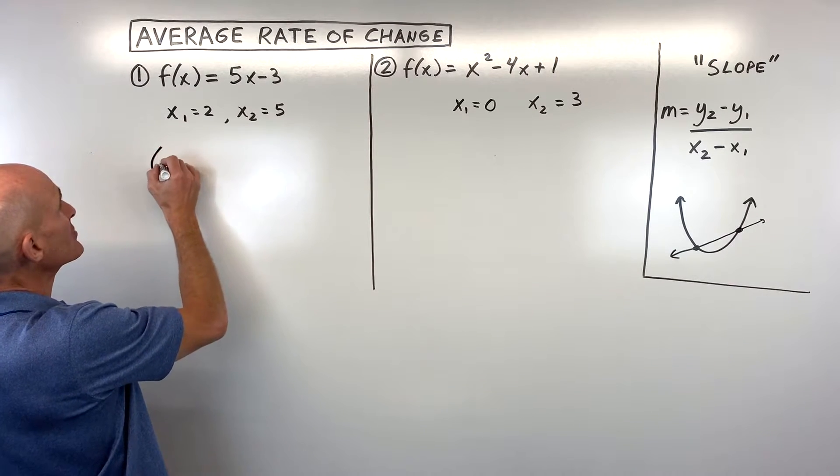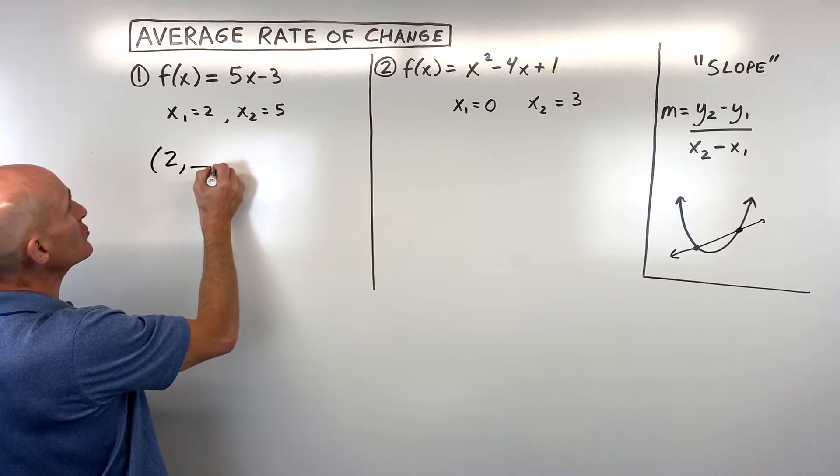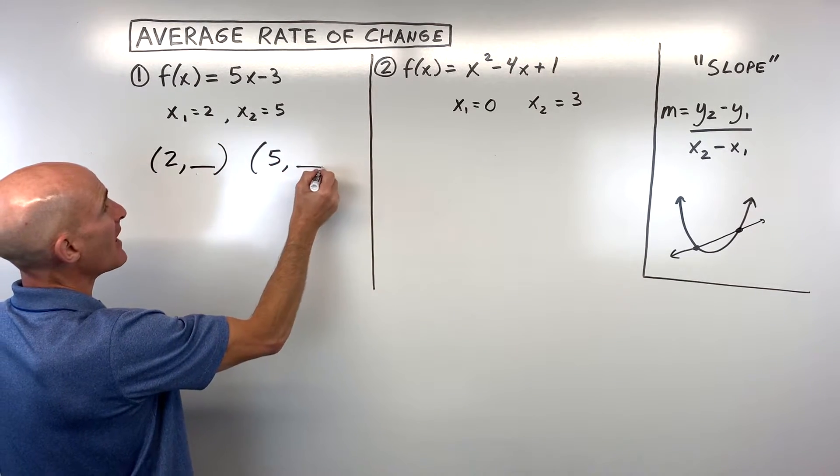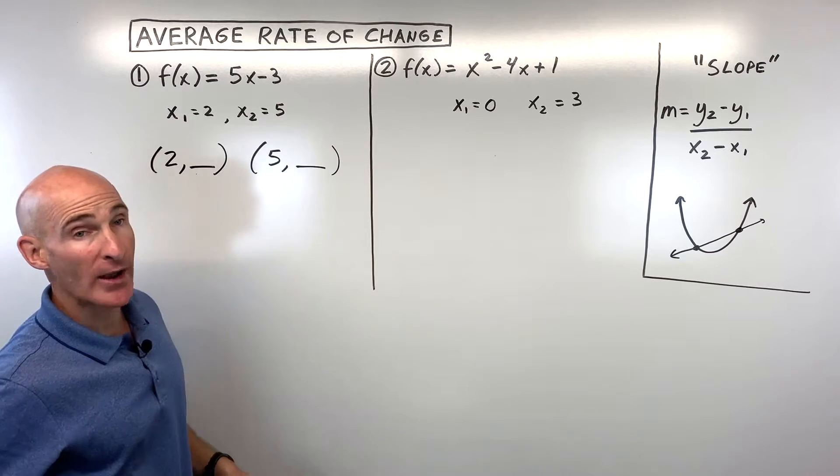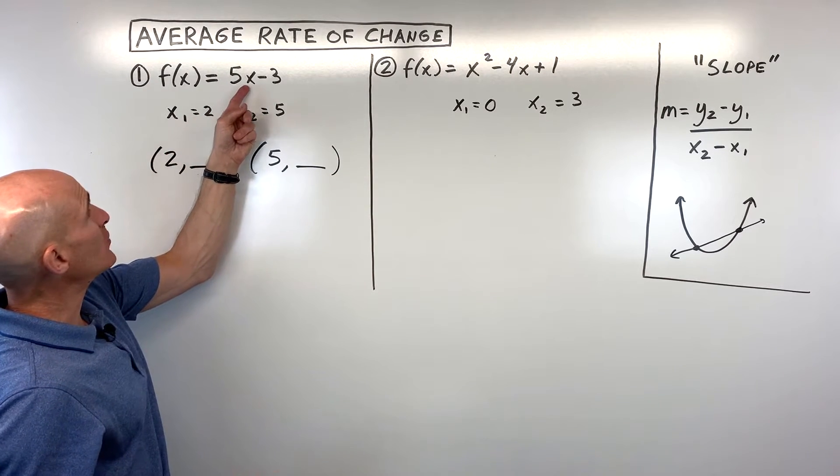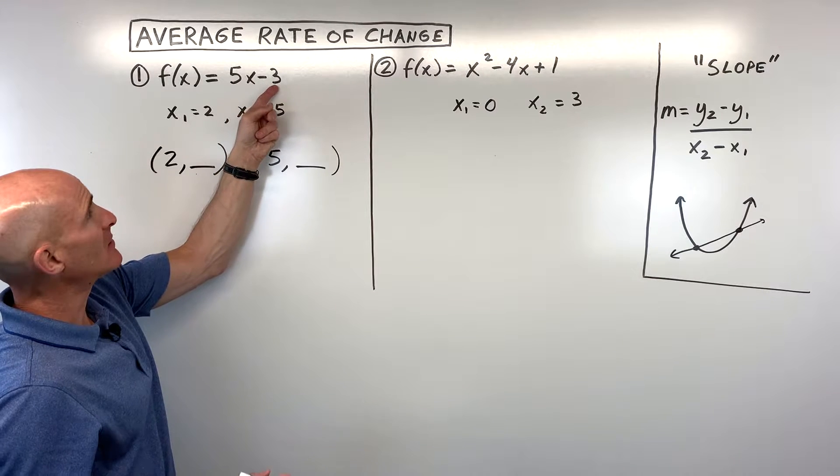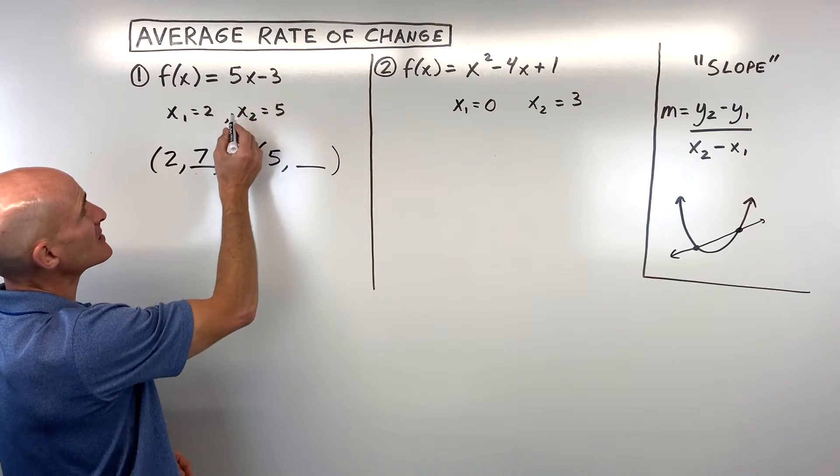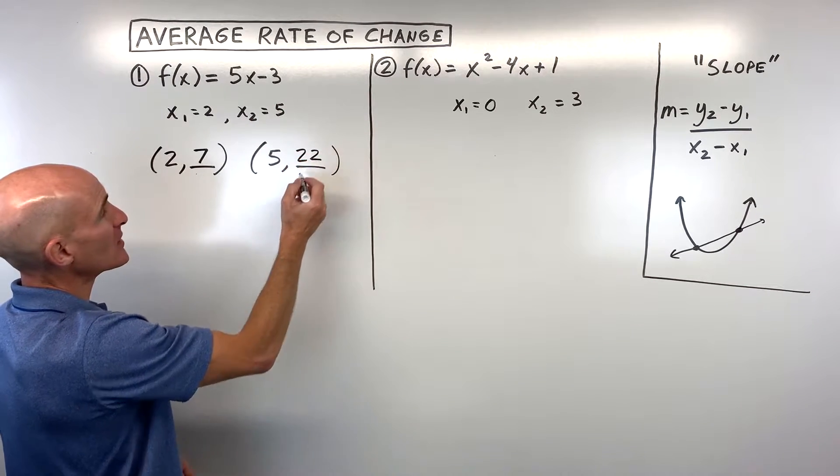So what they're really telling us here is that the x-coordinate is 2. We'll have to find the y-coordinate. And then here on the second point, the x-coordinate is 5. We'll have to find the corresponding y-coordinate. So if we put 2 in, we get 5 times 2 is 10, minus 3 is 7. If we put 5 in, we get 5 times 5 is 25, minus 3 is 22.